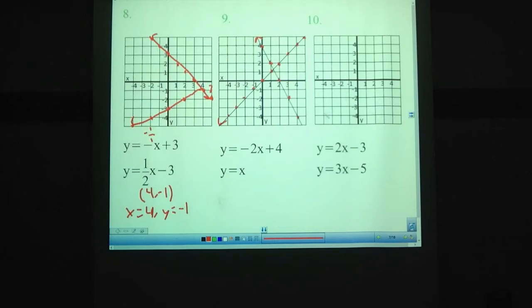Number 10. Let's look at that one. It's 2x - 3. So starting at -3. Up 2 to the right 1. Up 2 to the right 1. If you have any problems with graphing on these, let me know. At this point, I'm assuming you know how to graph. And then 3x - 5. Starting at -5 there. Up 3, right 1. Up 3, right 1. Up 3, right 1.